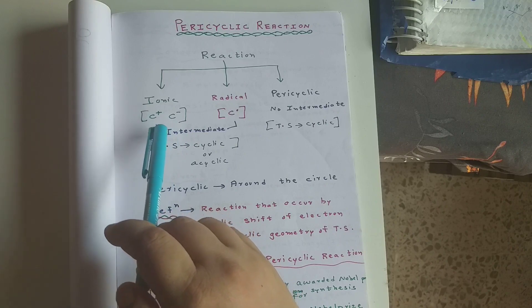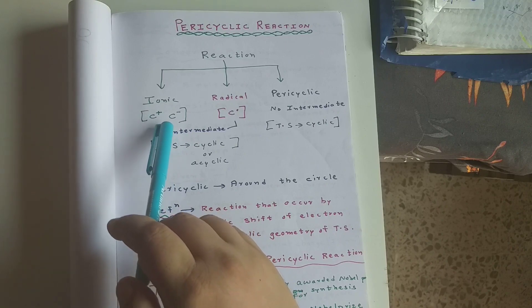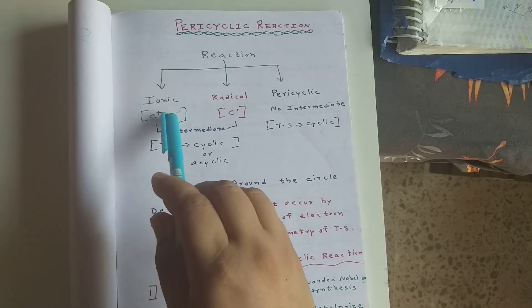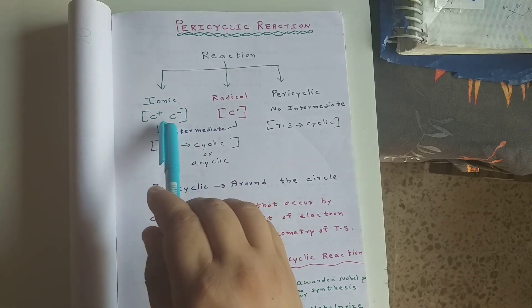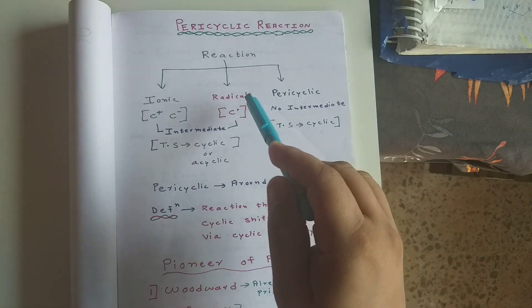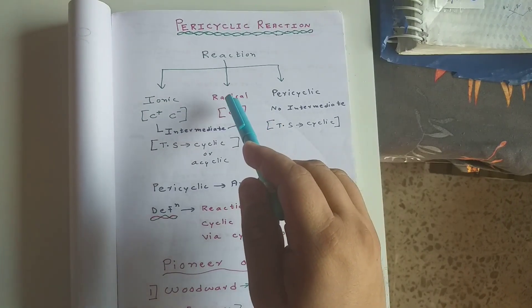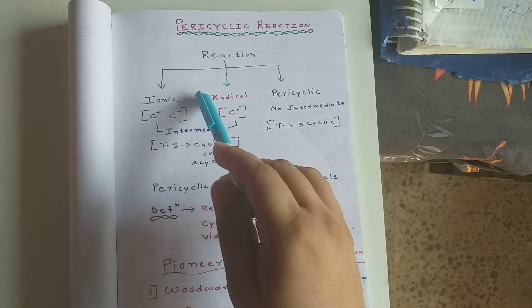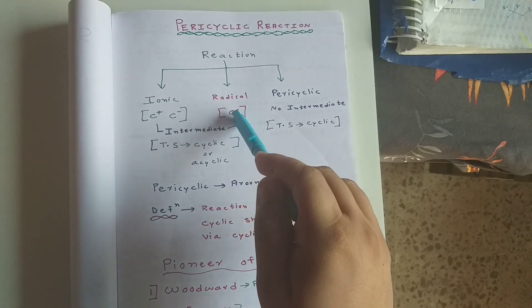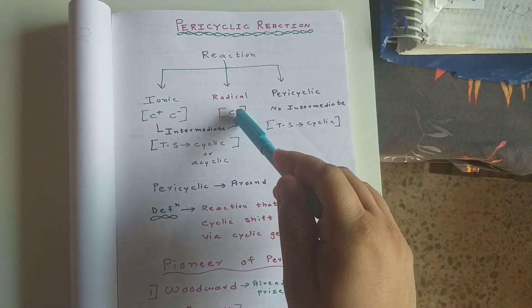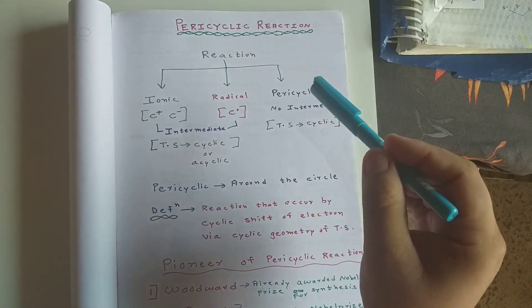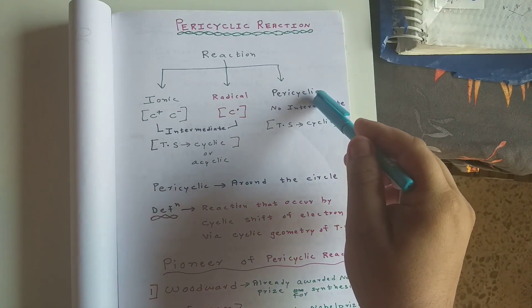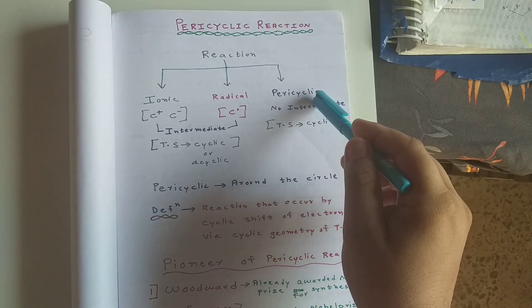Suppose if you have some ions like carbocation or carbanion, then you will be dealing with ionic reactions. If you have some radical, you classify it as a radical reaction. Pericyclic reactions especially come into the picture when we know there are no intermediates.